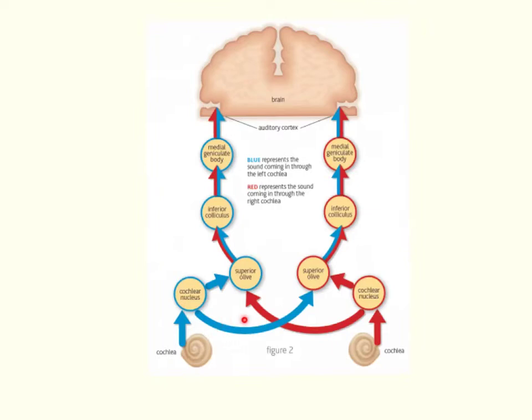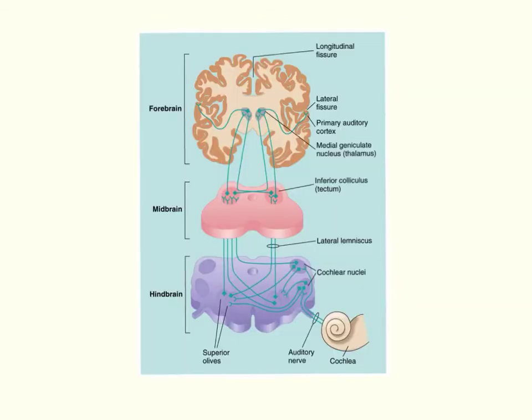The nerves connected to the cilia are then stimulated and the nerves send signals to the brain. These signals are changed by the brain into the sounds that we hear.